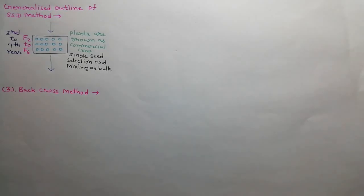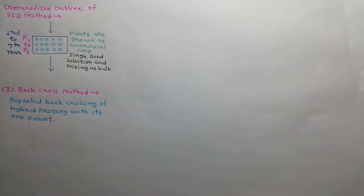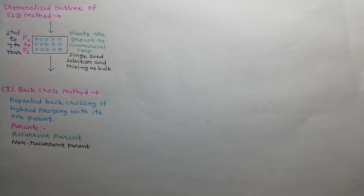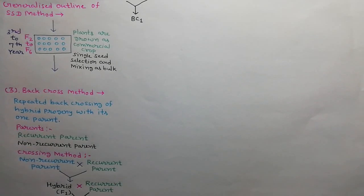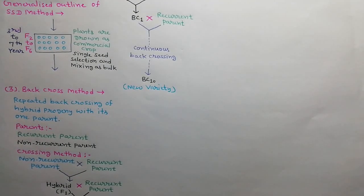The third method of crop improvement is the back cross method. In this method, the hybrid progeny is back crossed repeatedly with one of its parents. As a result, the genotype of the new variety becomes identical to that parent's genotype. Parents are divided into two categories: the recurrent parent or recipient parent, which is used for repeated back crossing, and the non-recurrent parent or donor parent. The F1 hybrid progeny is developed by hybridization between the non-recurrent and recurrent parent, then back crossed with the recurrent parent to produce BC1 progeny. BC1 is again back crossed with the recurrent parent to produce BC2, and this process is repeated continuously up to BC10 progeny development.